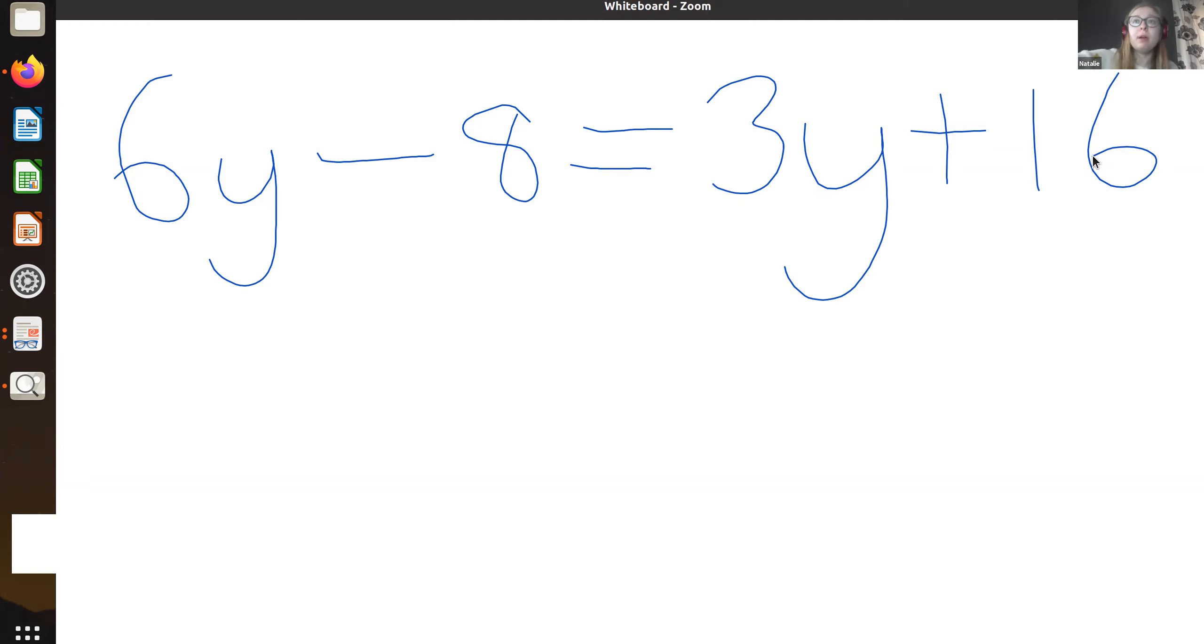Now, remember, which one's bigger? Six y or three y? Well, six is bigger than three. So six y is bigger. So we're going to take away three y. So six take away three, it gives us three y. Take away eight is equal to 16. And then that looks like the ones we did before.